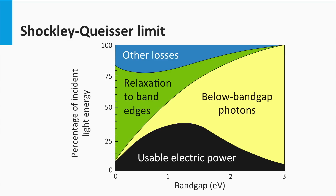We don't allow the solar cell to increase in temperature. This means that all energy in the incoming AM1.5 spectrum can escape the system of the solar cell by either the current density generated or by the radiative recombination of charge carriers. As a result, the maximum efficiency which can be achieved is around 33% in the band gap range from 1 eV up to 1.8 eV, as indicated by the black area in the shown graph.